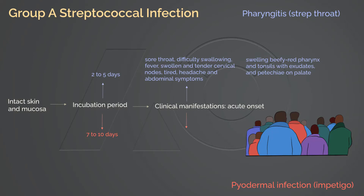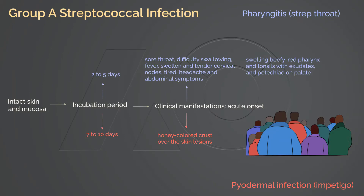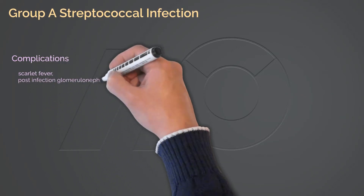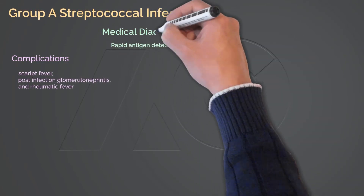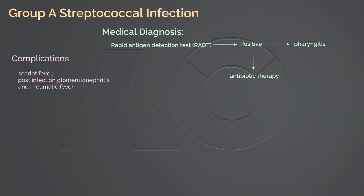The characteristic clinical manifestation of Streptococcal impetigo is honey-colored crust over the skin lesions. If left untreated, significant sequelae such as scarlet fever, post-infection glomerulonephritis, and rheumatic fever might occur. Rapid antigen detection test is available for making a medical diagnosis for strep throat. A positive reading guides antibiotic therapy. However, follow-up with culture is necessary if a negative reading is yielded. Culture from skin lesion is not clinically efficient; therefore, there is no testing available for making a medical diagnosis of Streptococcal impetigo.